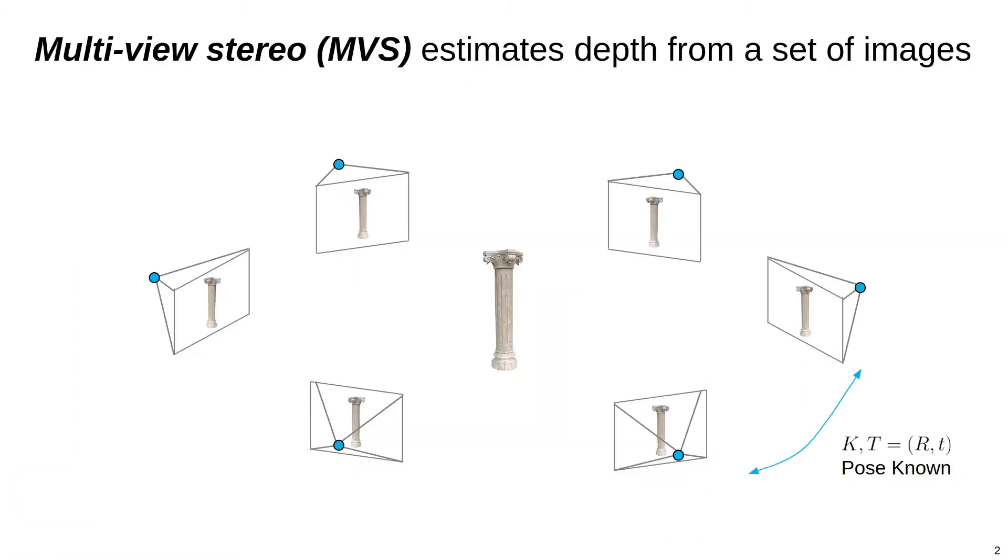Multiview Stereo, or MVS, is a fundamental problem in computer vision where the geometry of a scene is estimated from a set of images taken from known but unconstrained views.